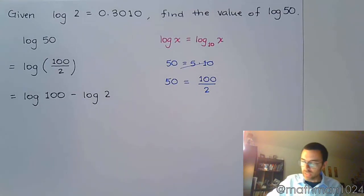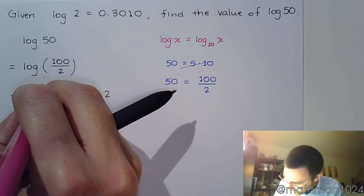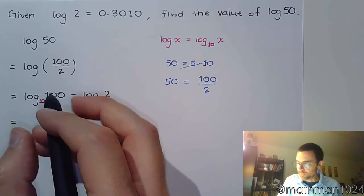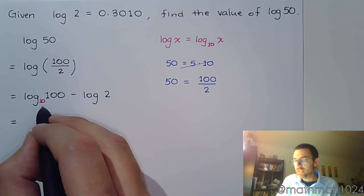We can say log of 100 minus log of 2. Now, as we've mentioned, using the common log, this has a base of 10. So you've got to think about how do we answer these questions about logarithms. What's the power of 10 that gives you 100?